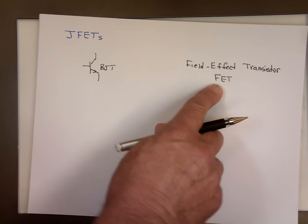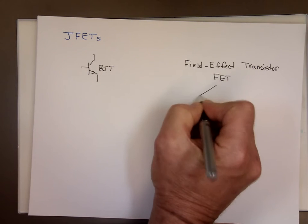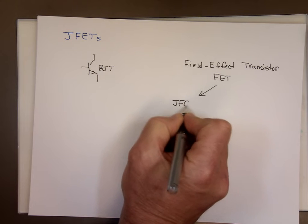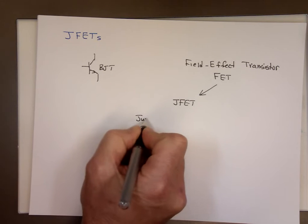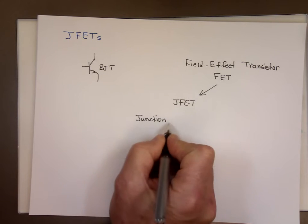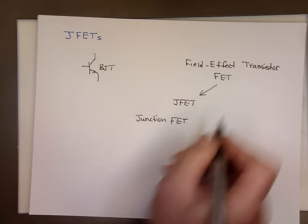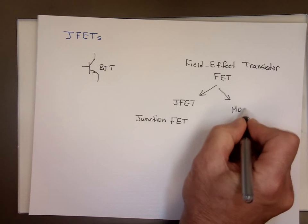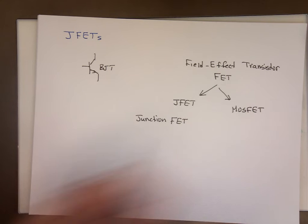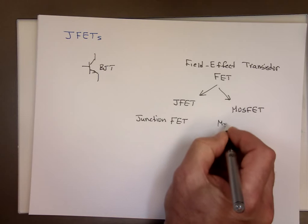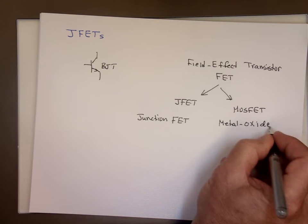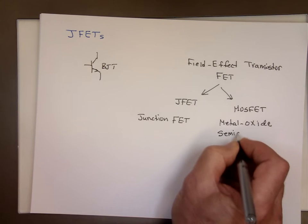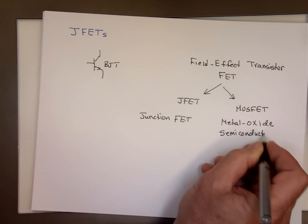There are two kinds of FETs. One is called JFET — junction field effect transistor. And the other one is called the MOSFET, which stands for metal oxide semiconductor field effect transistor.